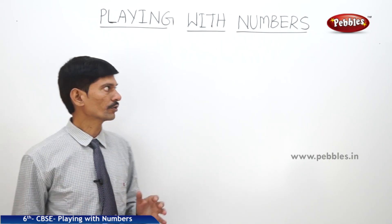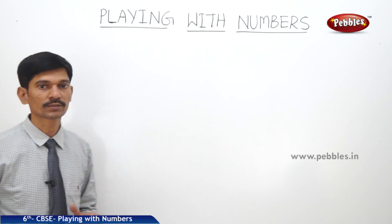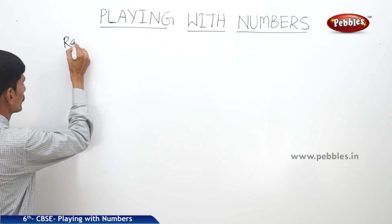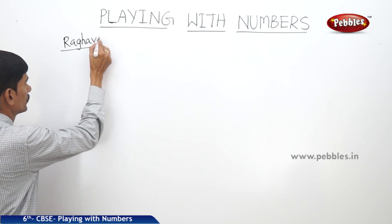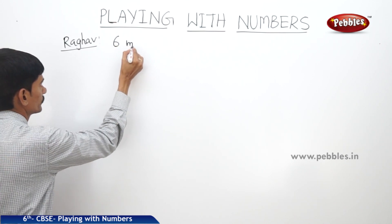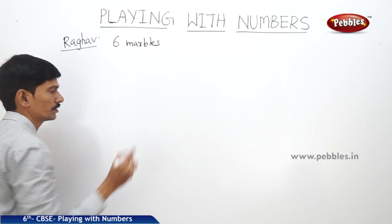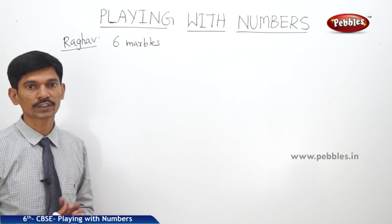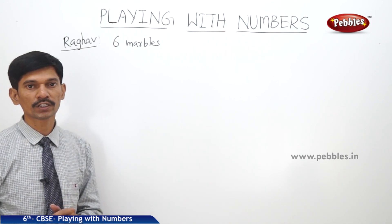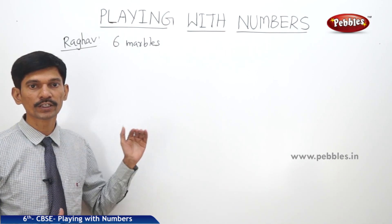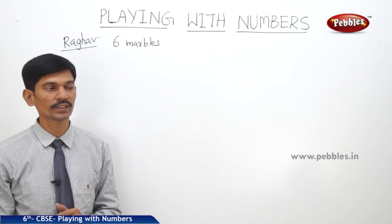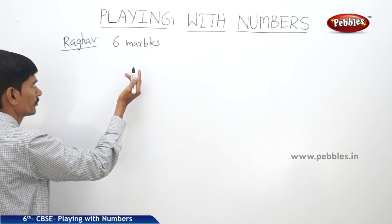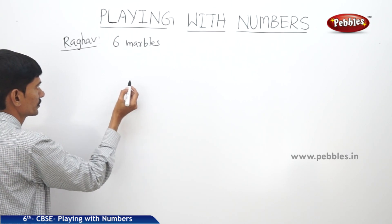Let us start with the factor and multiple concept. For example, Raghav has six marbles and he wants to arrange all the marbles in different rows and columns such that there will be equal number of marbles in each row. He can arrange the marbles in different ways.